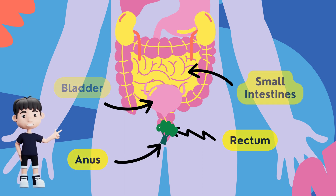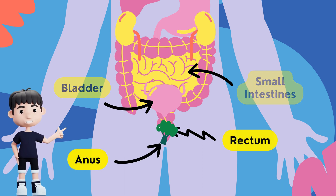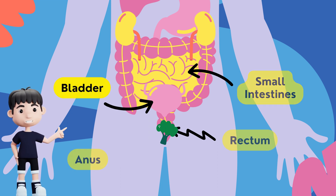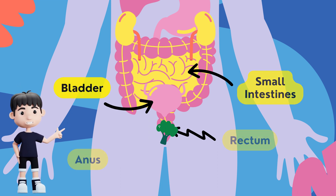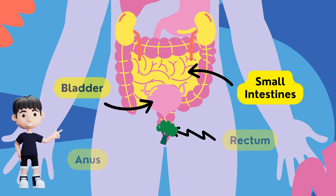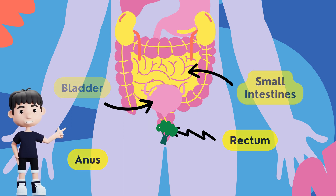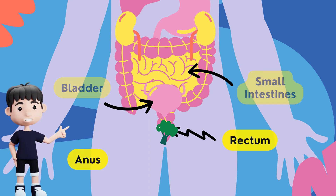Gallbladder. The gallbladder helps with the digestion of fat. It stores and concentrates bile, and when you eat fatty foods, the gallbladder contracts and squeezes bile into the bile duct.